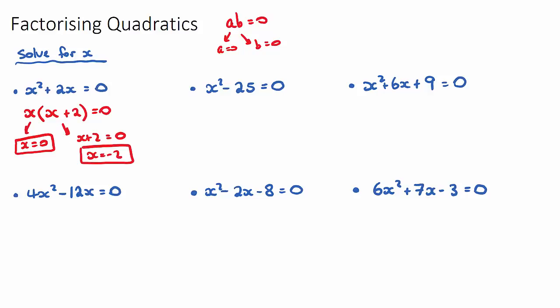And we can just quickly check that because if we look at our original equation, if x was 0, 0 squared is 0 plus 2 times 0 is 0 and 0 does equal 0. So we balance the equation. And if x were to equal negative 2, negative 2 squared is 4 plus 2 times negative 2 would be negative 4, which would also give us 0.